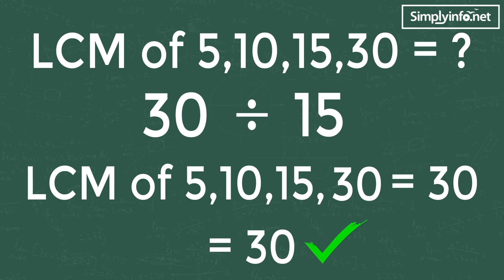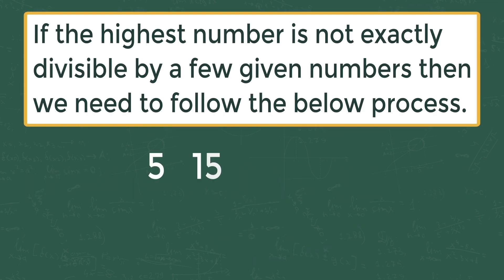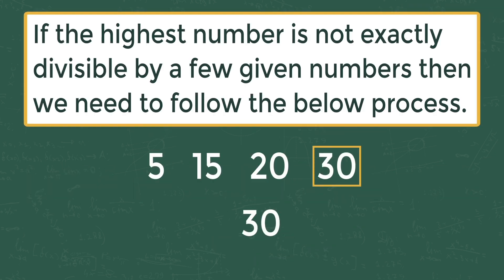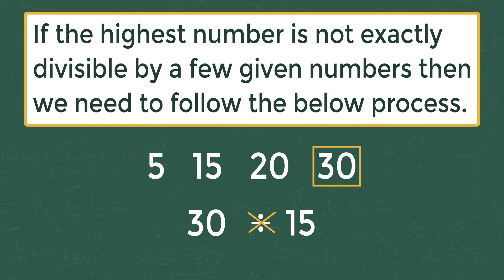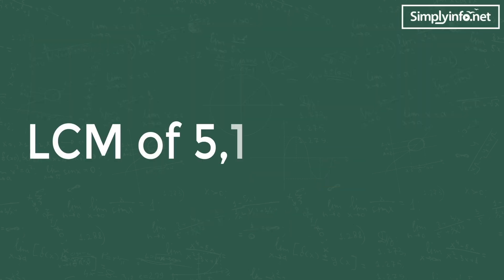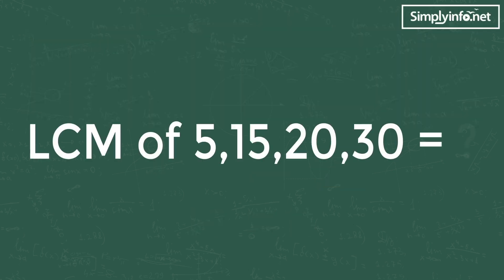Trick 2: if the highest number is not exactly divisible by a few of the given numbers, then we need to follow the below process. Let's solve the second problem: LCM of 5, 15, 20, and 30 is equal to what?